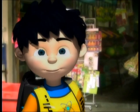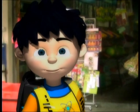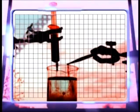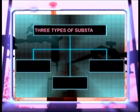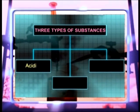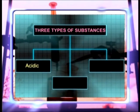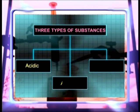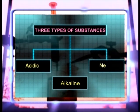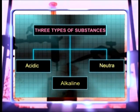Do not forget, there are also neutral substances. There are three types of substances: acidic substances, alkaline substances, and neutral substances.